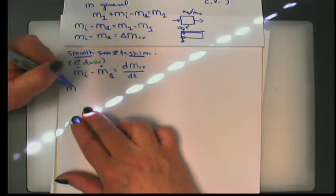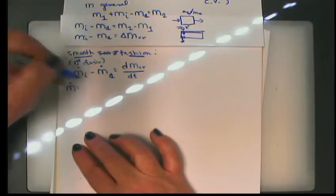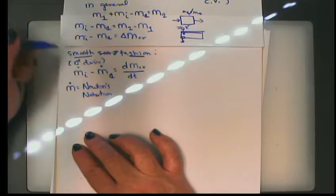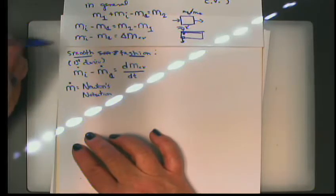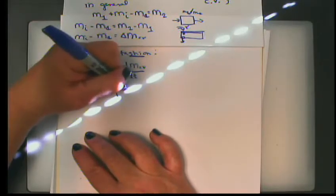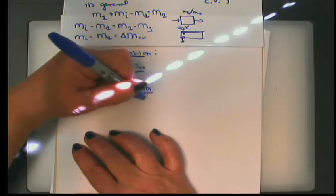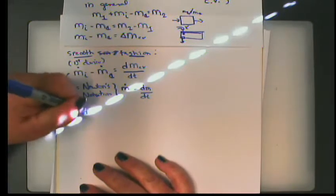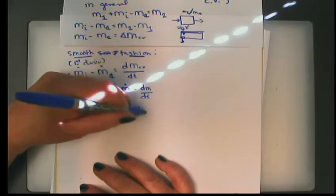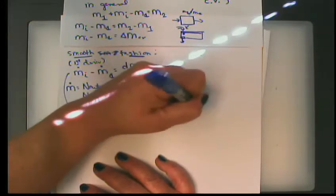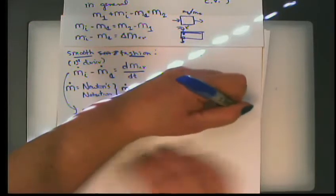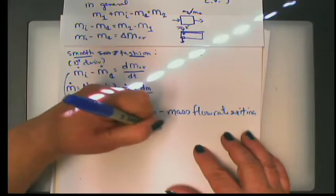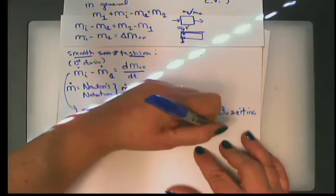When you put a dot above something, that is referred to as Newton's notation. M-dot means dm/dt — the time rate of change. So mass flow rate in minus mass flow rate exiting equals the time rate of change of mass within the control volume.